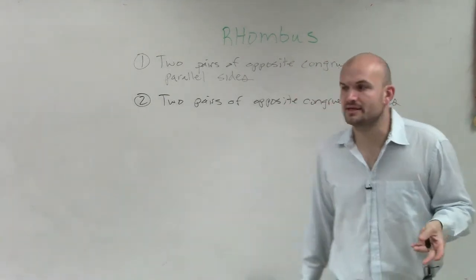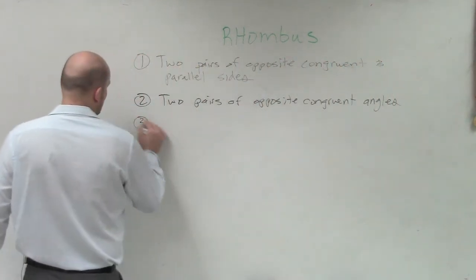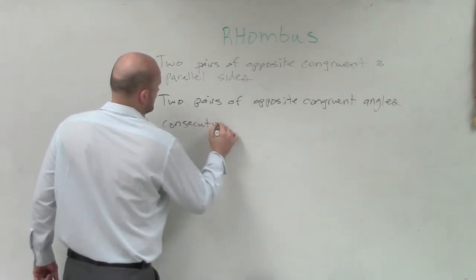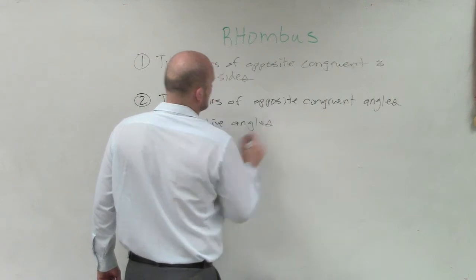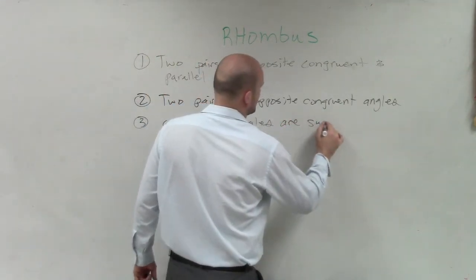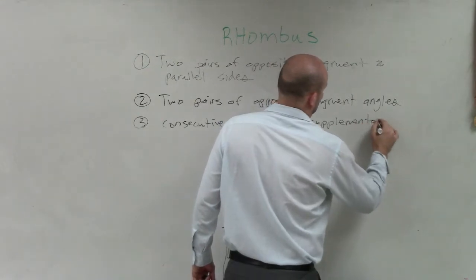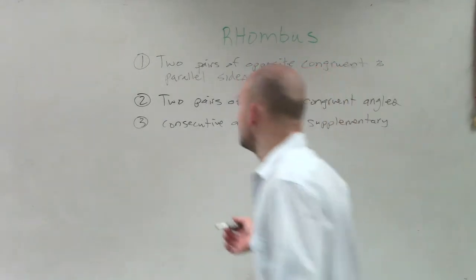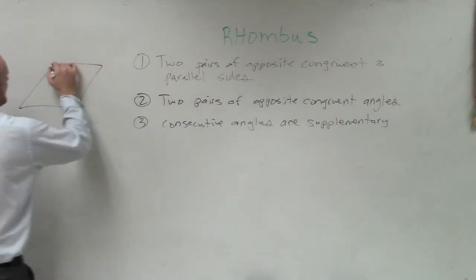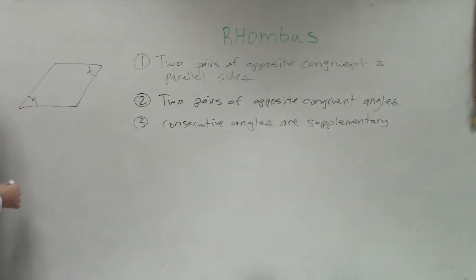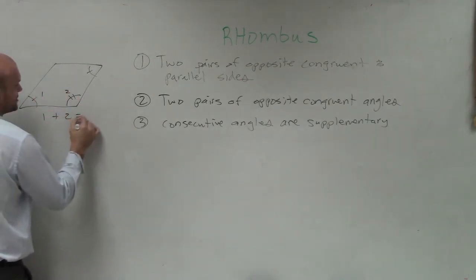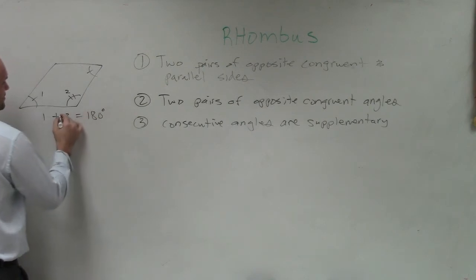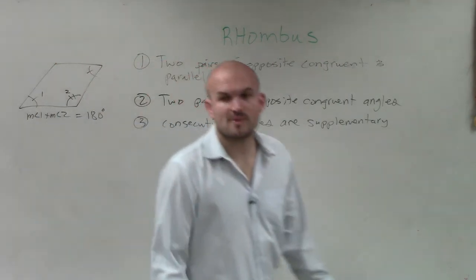We could also say that consecutive angles are supplementary. Now remember when we talked about supplementary angles with rectangles, supplementary means that consecutive angles. So let's look at this again. If you ever have a rhombus, opposite angles are equal to measure. Consecutive angles, let's say this is angle one, that's angle two. Angle one plus angle two equals 180 degrees. So remember that's what supplementary means.